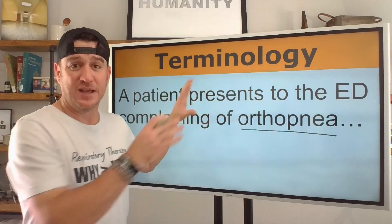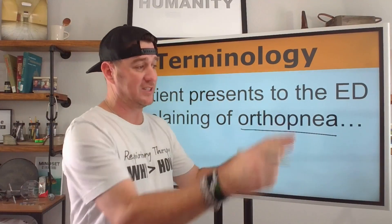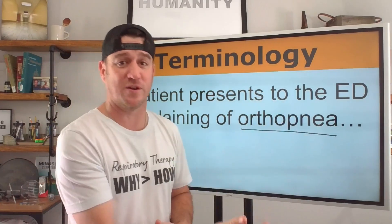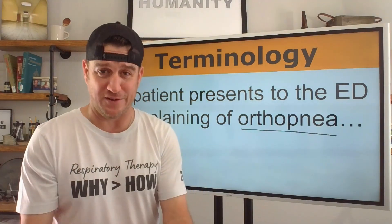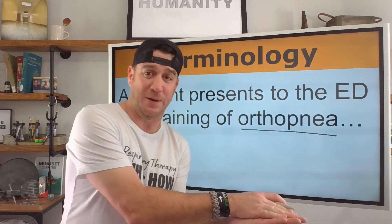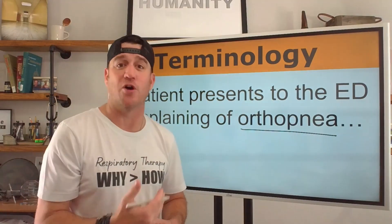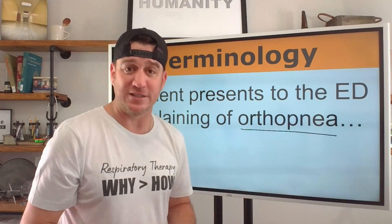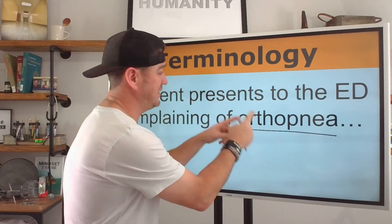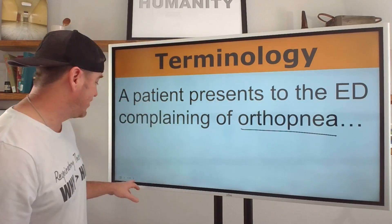If a patient presents complaining of shortness of breath in the supine position, the patient's never going to say 'I'm having orthopnea.' You're the expert. You look at this and say: when you're sitting up, you're not short of breath — when we laid you down, now you're short of breath. This is orthopnea. I know this is highly related to pulmonary edema, specifically congestive heart failure. There is a redistribution of fluid within the alveolar units when we lay the patient supine versus sitting up straight. So I'm probably going to be giving Lasix, starting CPAP, and giving oxygen because this patient is presenting with orthopnea.